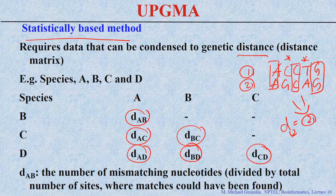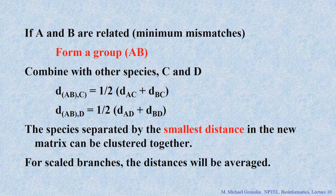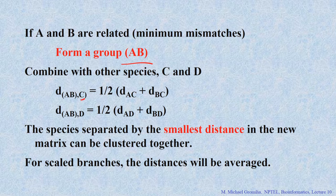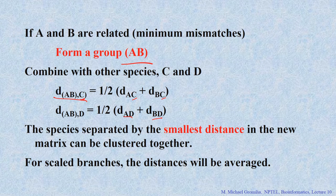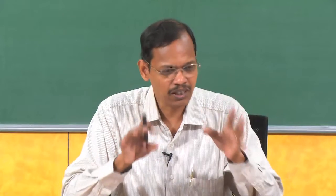If A and B are the closest pair, they have the most similarities and are combined into a group. To combine group AB with C, we use the equation: D(AB,C) = (D(A,C) + D(B,C)) / 2 — take the average. Likewise, D(AB,D) = (D(A,D) + D(B,D)) / 2. Based on the smallest distance, you construct a tree.